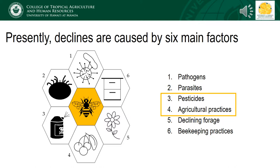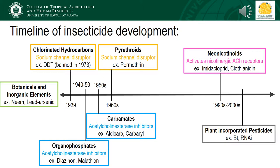In the previous lecture I discussed the role pathogens and parasites of honeybees play in declines of bees. This time I will discuss the impacts of pesticides and other agricultural practices, which are often inextricably linked with regards to the impacts they have on pollinator declines.